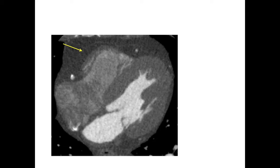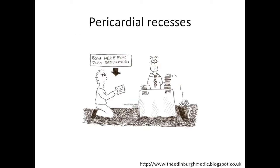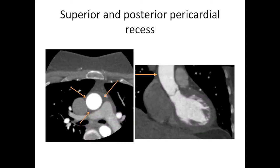The pericardium has a number of folds and reflections, and these are the pericardial recesses. When it comes to pericardial recesses, the only way to get the hang of them is really just to see lots of normal hearts and chests. I like to keep life simple, and I think about three different words: superior, posterior, and transverse sinus.